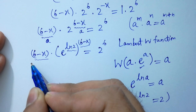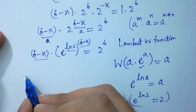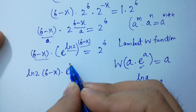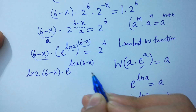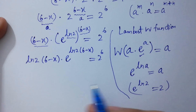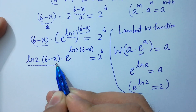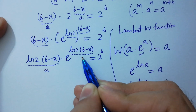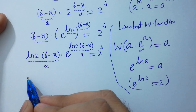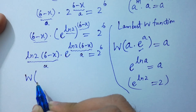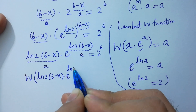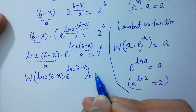so multiply by natural log 2 on both sides. We get natural log 2 times 6 minus x times e to the power natural log 2 times 6 minus x. Here, a is natural log 2 times 6 minus x, and this is also a. Applying the W function, the left side gives W applied to the right side.